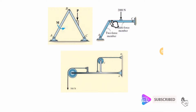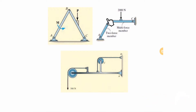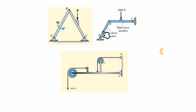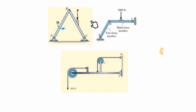Trusses are usually used for compensating loads or as a load barrier in structures, but machines are used for transferring power or transferring forces to different parts. That's one of the main differences between frames and trusses.